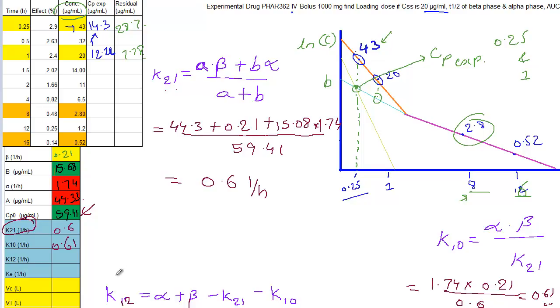The final step is to solve for K12. K12, it is a pretty straightforward equation. It is alpha plus beta. It is alpha is 1.74 plus 0.21 minus K21 that is 0.6 minus 0.61 for K10. If you solve for this one, you will get a value of 0.74 per hour inverse.